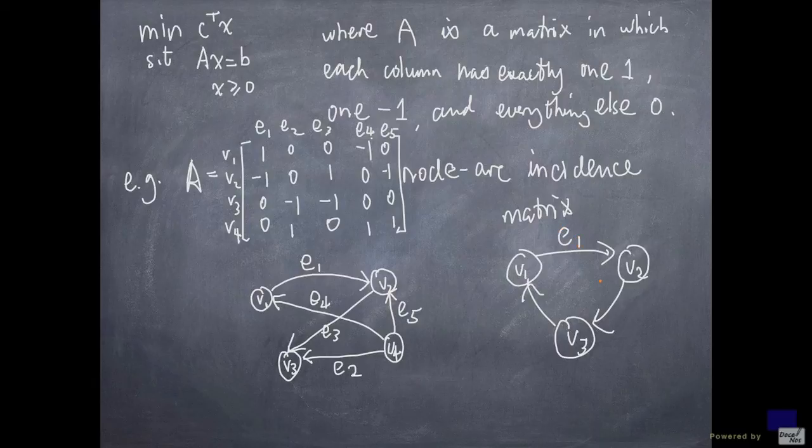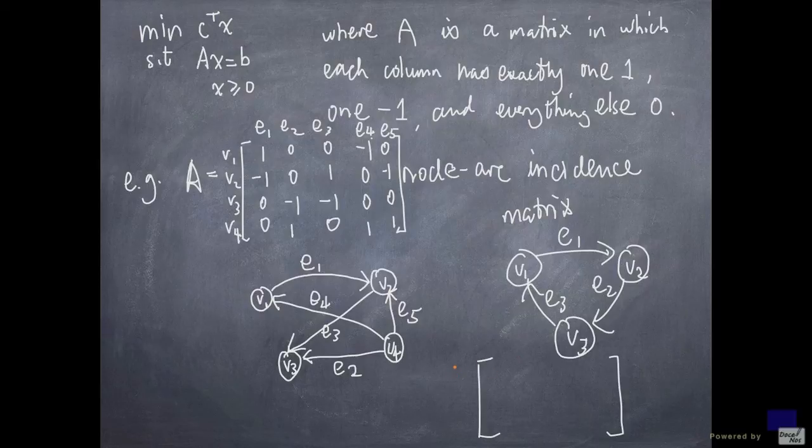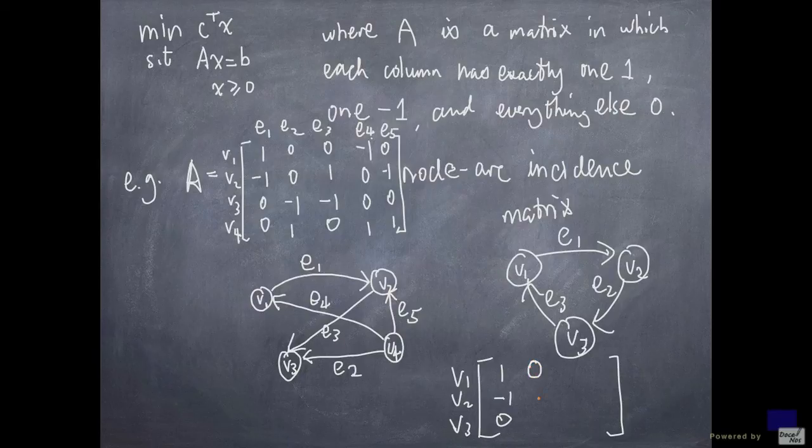Alright? So I have e1, e2, e3, then the matrix that corresponds to this will be what? So e1 leaves v1 and enters v2. The first column will be 1, minus 1, 0. And this will be 0, 1, minus 1. And this will be minus 1, 0, 1. Okay?